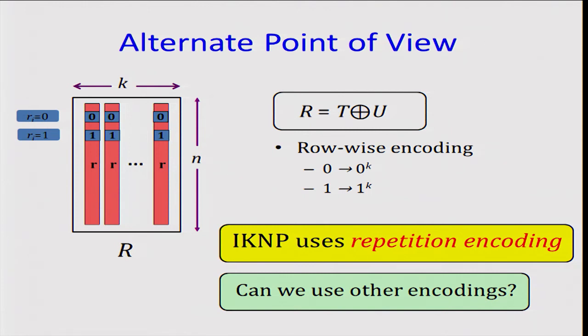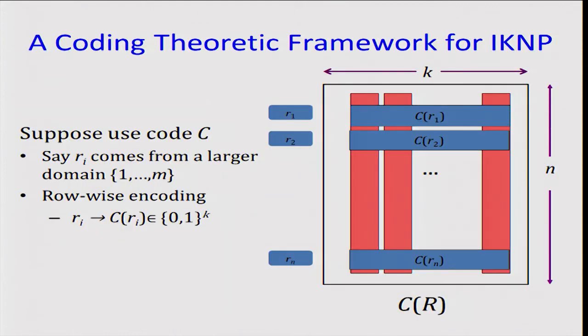This naturally raises the question, can we use more sophisticated encodings? After all, repetition encoding is a low-rate code. So suppose we use the code C, and we assume that RI comes from a larger domain, say one through M, then we use the code C to map RI to C of RI, which is now a K-bit string. Now the receiver, using his selection RI, is going to construct this matrix C of R. Then let's see how the IKNP protocol works in this case.